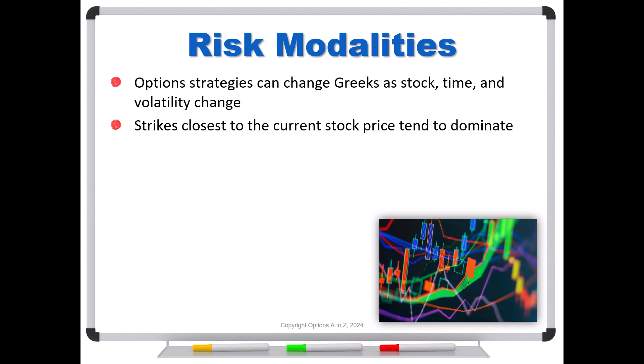So the main thing that risk modalities show is that risk is not equally distributed across stock prices, even for a single option position. But they get more complex, as you're going to see, when we start talking about spreads.